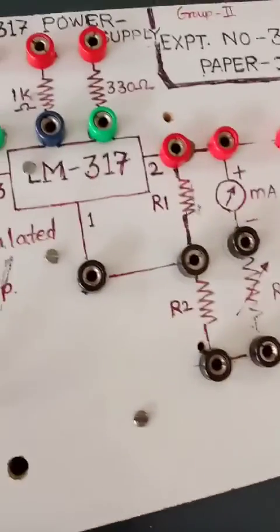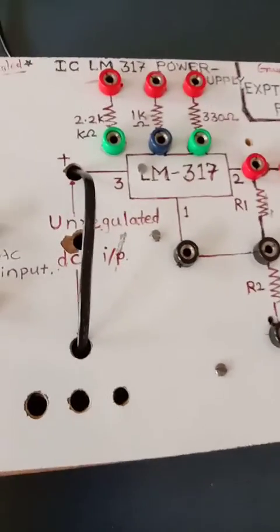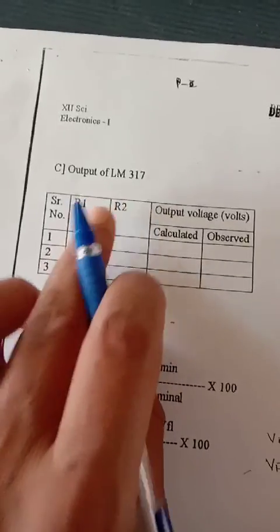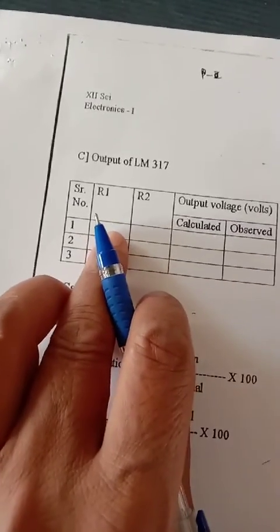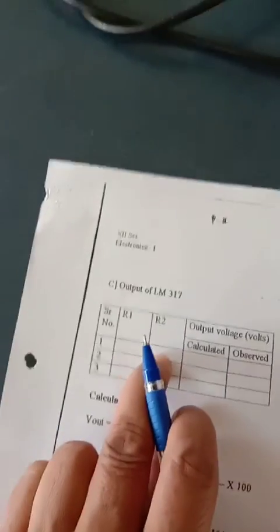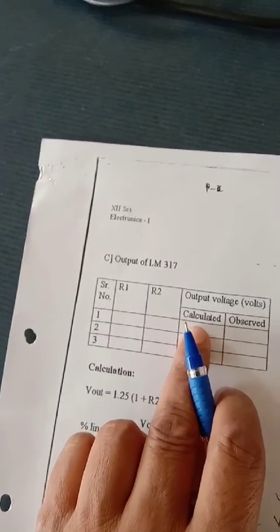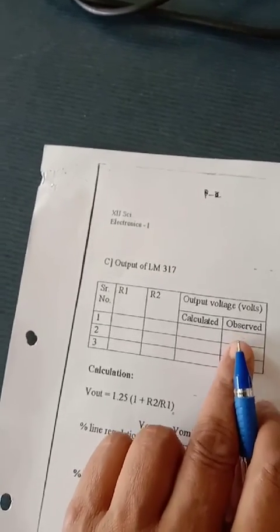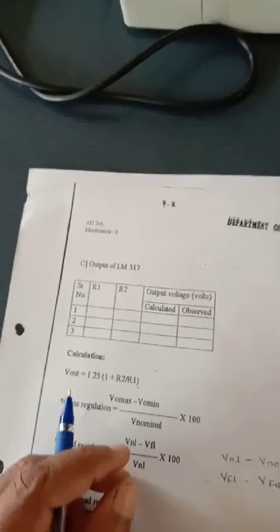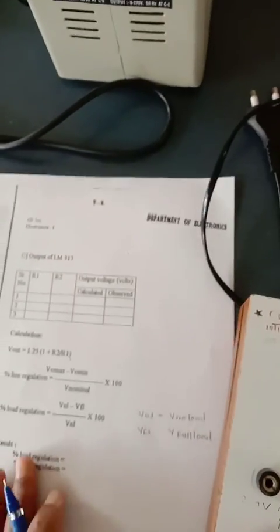According to this formula, first we have to calculate the DC output voltage and then we have to measure it practically — we have to observe that this output voltage should be nearly equal to 5 volt. Now for observation number two, in the observation table we write R1 equal to 330 ohm, R2 equal to 1 kilo ohm, along with calculated DC output voltage and observed practical output.